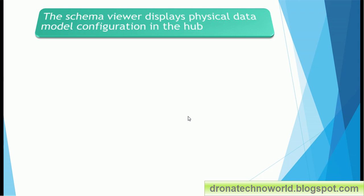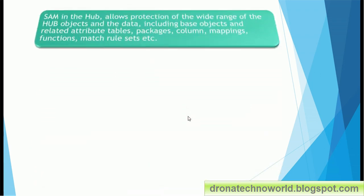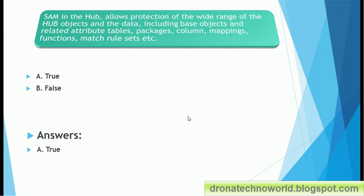Next question: 'The schema viewer displays the physical data model configuration in the hub' — is it true or false? The correct answer is true — we can see the physical data model configuration. Next question: SAM (Security Access Manager) in MDM allows protection of a wide range of hub objects and data including base objects, related attribute tables, packages, columns, mappings, functions, and natural sets — is it true or false? The correct answer is true.